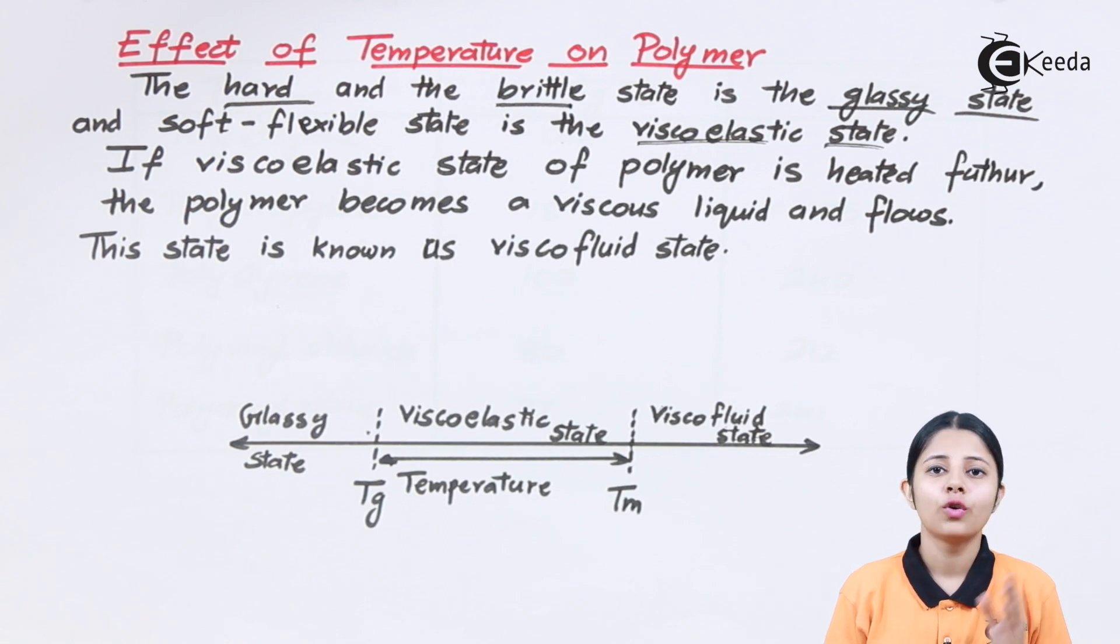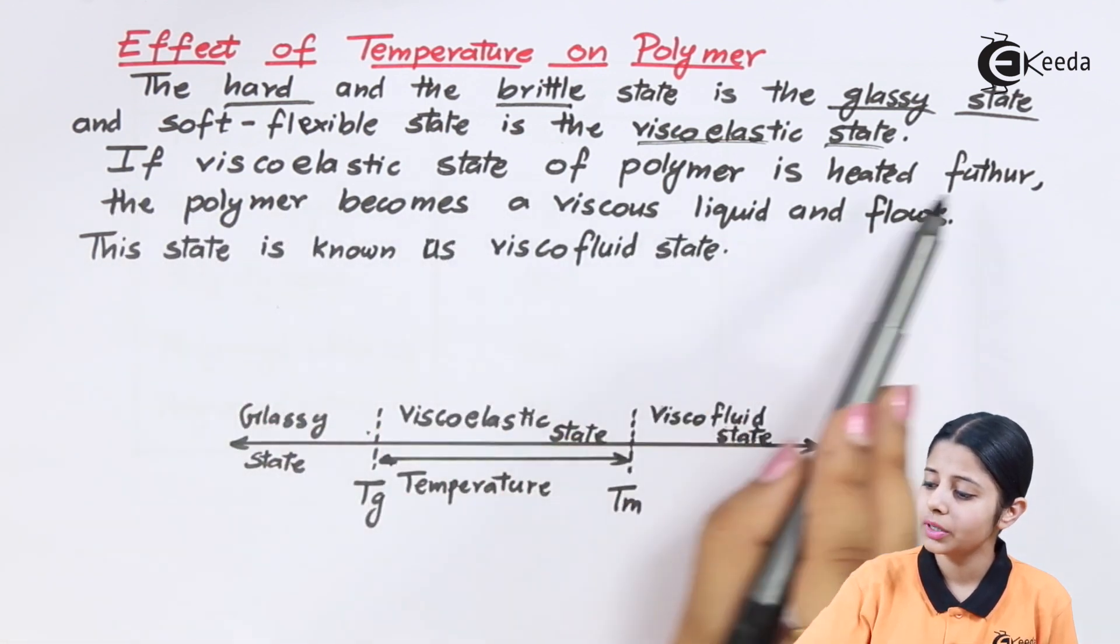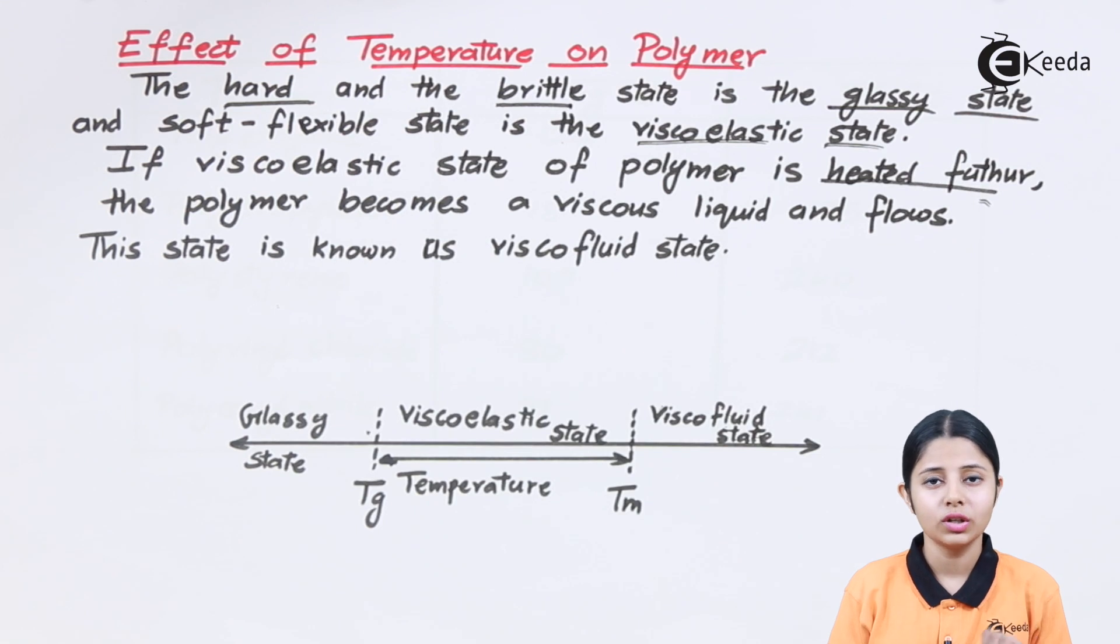Increasing the temperature of the polymer leads to the formation of viscoelastic state from the glassy state. The viscoelastic state of the polymer is heated further. We have discussed the first two states. The first was glassy, the second was viscoelastic, but after getting the viscoelastic state, you heat it further.